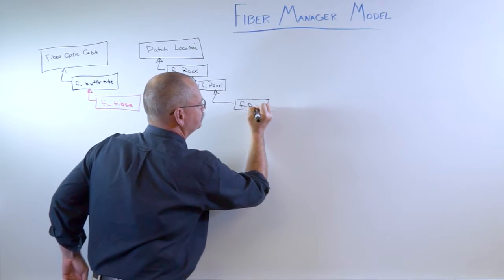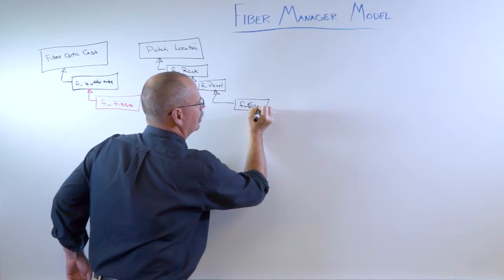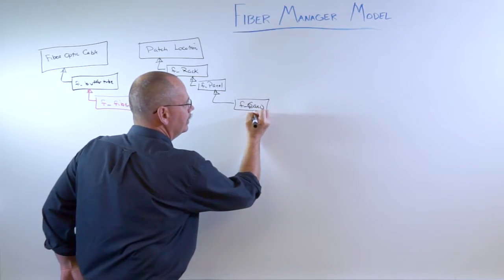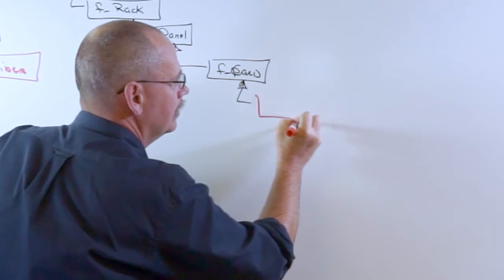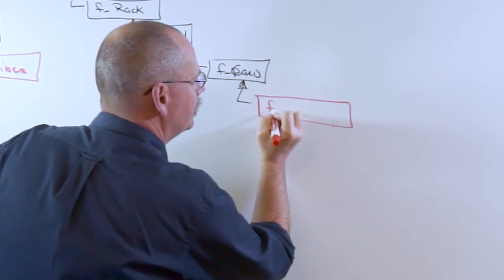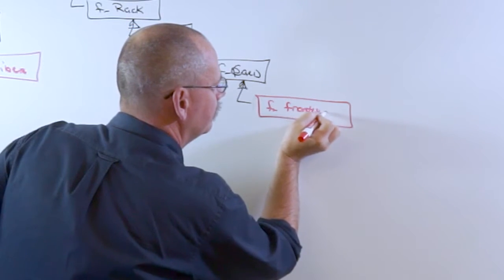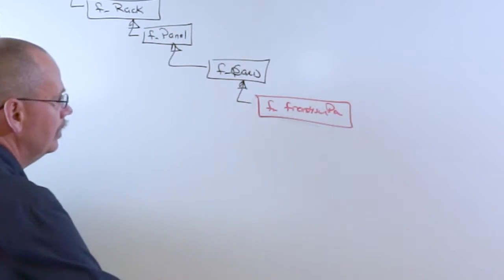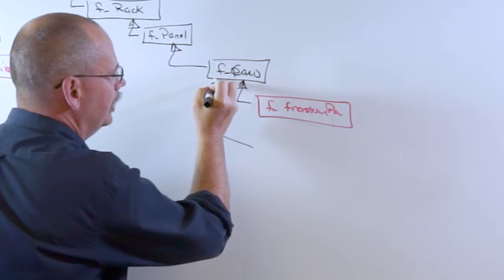A child of the panel is the card, a patch or just F underscore card. The child of a card, F underscore front side port.